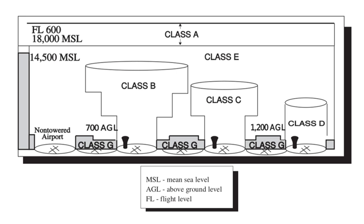Prohibited areas contain airspace of defined dimensions within which the flight of aircraft is prohibited. Such areas are established for security or other reasons associated with the national welfare. Prohibited areas in the United States are published in the Federal Register and are depicted on aeronautical charts. The area is charted as a 'P' followed by a number. Examples of prohibited areas include Camp David and the National Mall in Washington, D.C., where the White House and the Congressional Buildings are located.